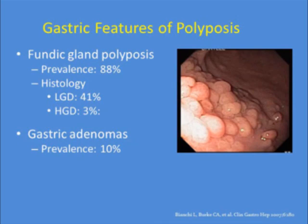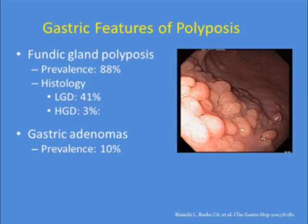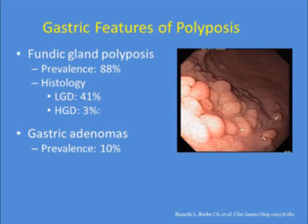Regarding gastric features of polyposis: fundic gland polyposis is universal in these individuals, with a mean of about 30 polyps. The histology — don't be surprised by evidence of low-grade dysplasia; it's foveolar in nearly 50% of individuals and not the same as adenomatous low-grade dysplasia. High-grade dysplasia was found universally in polyps a centimeter or greater in size, so sample small ones but snare-eradicate large lesions. Gastric adenomas, usually in the antrum, occur about 10% of the time and should be completely resected.